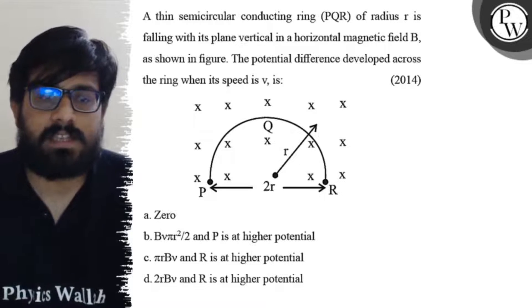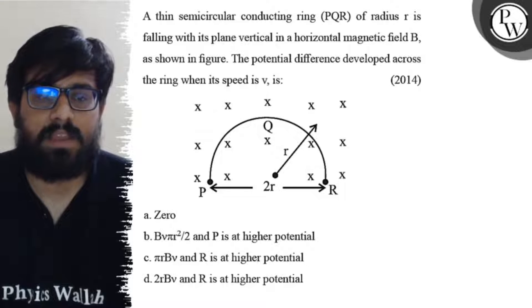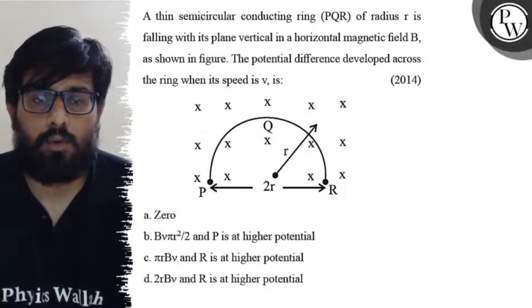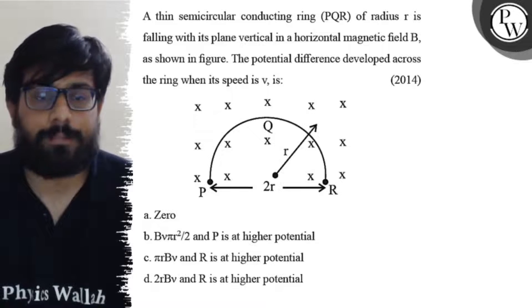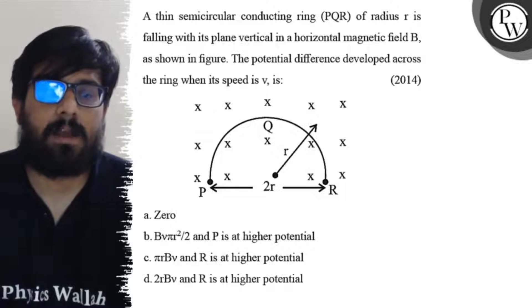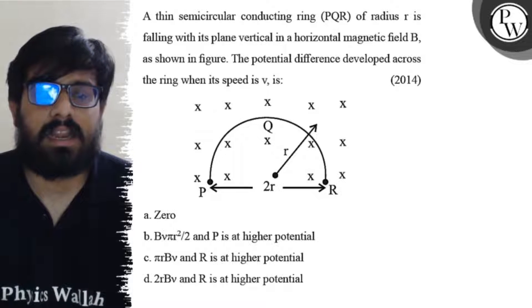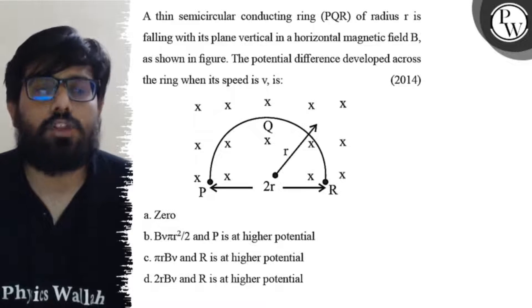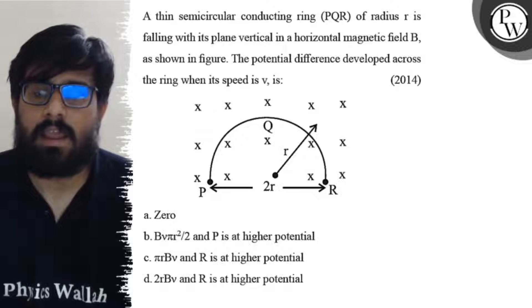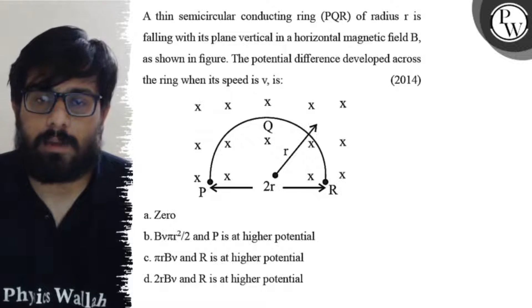The first option says zero. Second option says BV·π·r²/2 and P is at higher potential. Third option says π·r·BV and R is at higher potential. Fourth option says 2rBV and R is at higher potential.